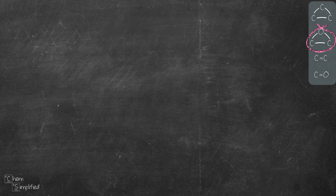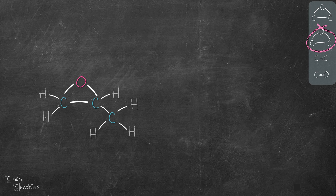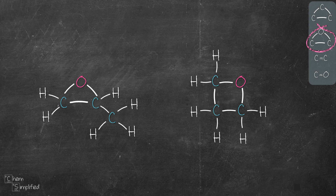Now let's add 1 oxygen into the ring. The smallest ring consists of 3 atoms — 2 carbons and 1 oxygen. We take the extra carbon and fill out the structure with hydrogens to get our first oxygen-in-ring isomer. We can also expand the ring to contain 4 atoms — 3 carbons and 1 oxygen in the ring — and fill the rest with hydrogens to get a second isomer. So these are the 2 structures we can get with a ring containing oxygen.